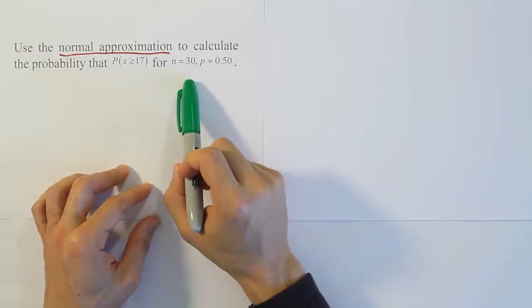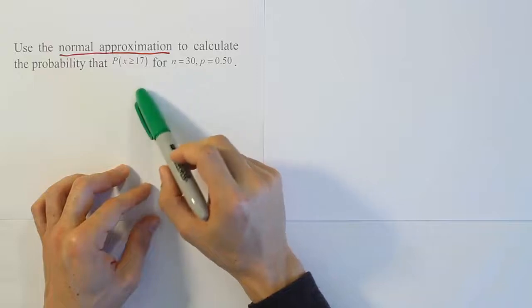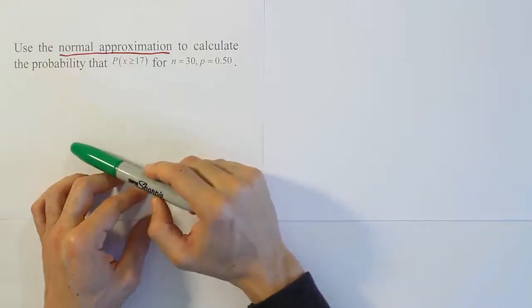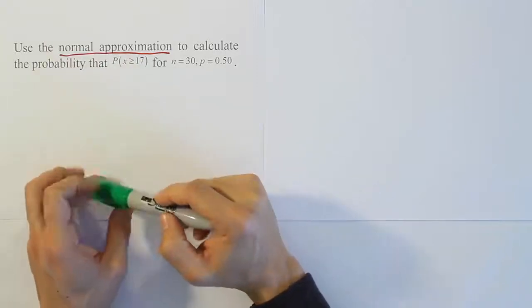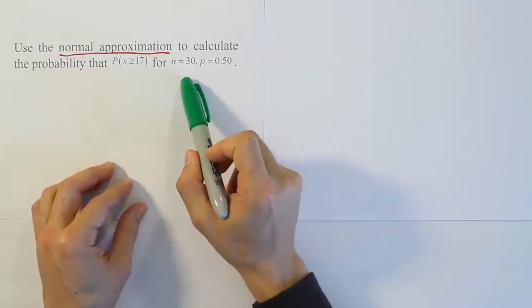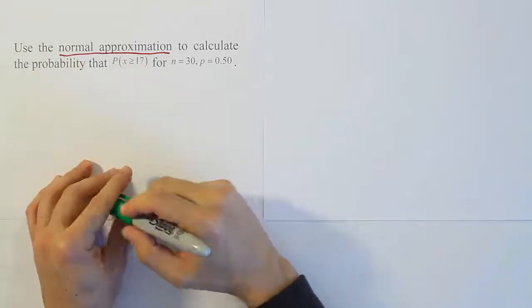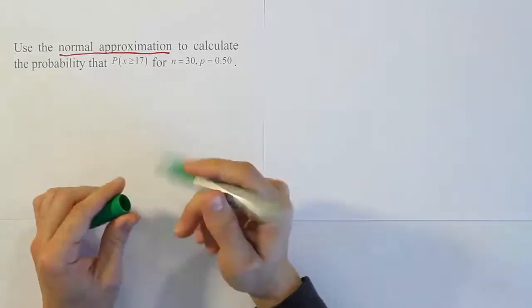Of course, you can use software. Software is a preferred choice these days. It's so readily available. But if you don't have software, you can use this normal approximation technique to be able to solve the problem. And even in the case of software, sometimes the software will have a faster time doing the answer if it can use the normal approximation technique instead of using the true binomial probability to do the answer.